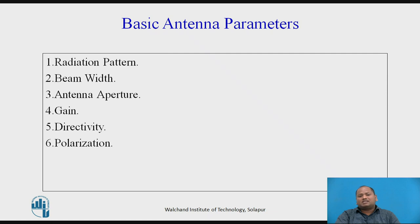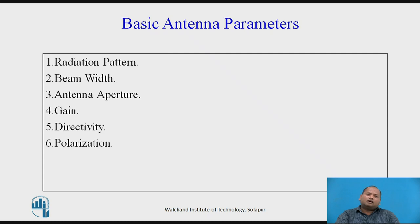The radiation pattern depends upon the physical structure of the antenna, which may be circular, rectangular, or some cross-sectional shape. Antenna aperture is classified into two types: physical aperture, which is the physical appearance of the antenna, and effective aperture, which is the area of the antenna responsible for the radiation pattern in a particular direction.